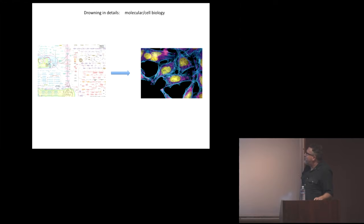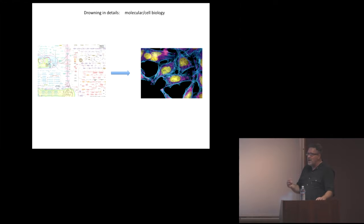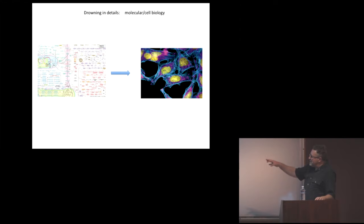The big problem is not that we don't have enough data. We can do RNA sequencing and genomics. The problem is that in biology we're drowning in data — huge data sets are being accumulated every day, and the amount of knowledge in terms of individual facts is going up exponentially. But we don't know how to go from that mass of data and synthesize it in such a way that we can predictively understand how the cell will behave.